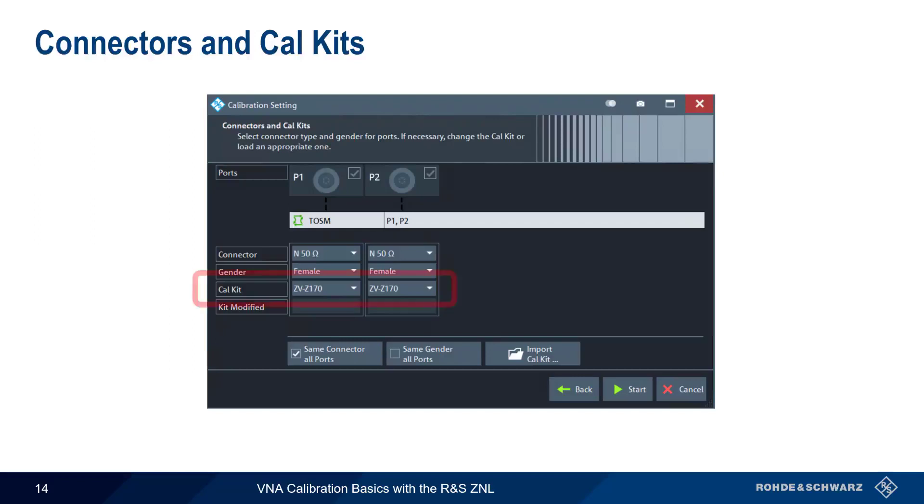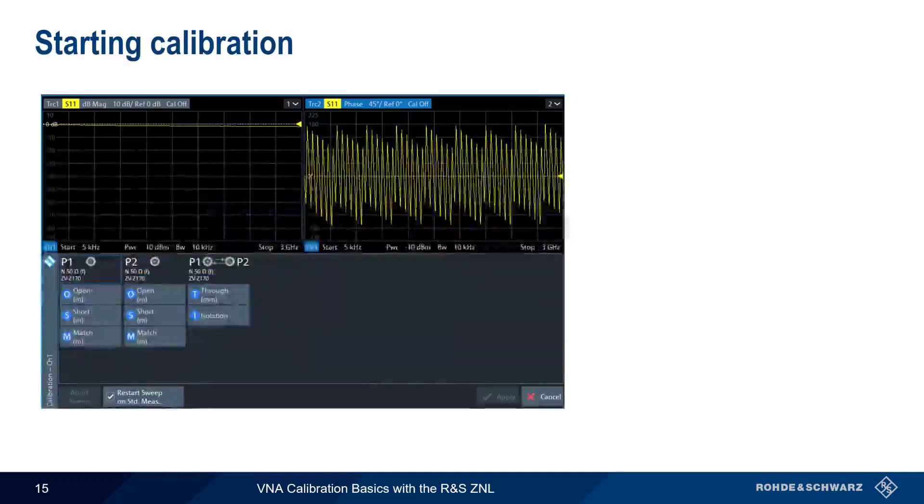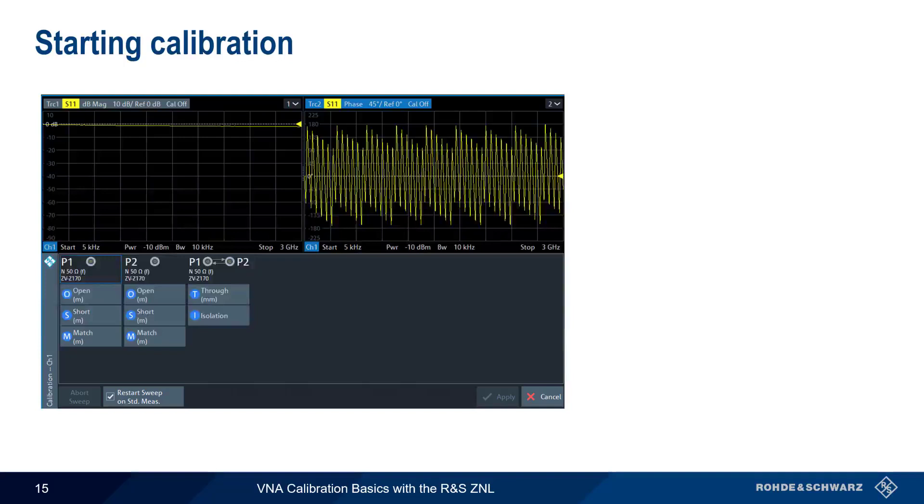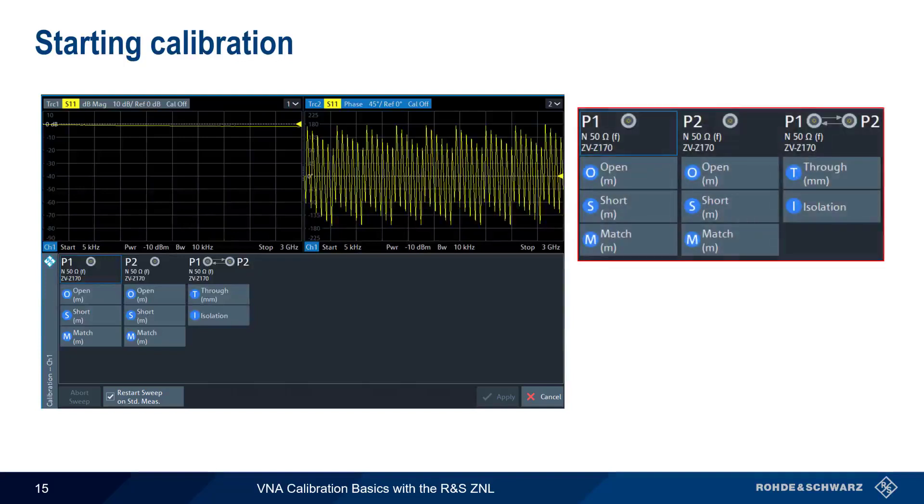And just as before, we need to either select or import our calibration kit data, this time for both ports. Note that for our full two-port calibration, there are eight total steps that have to be completed. We will need to repeat the open short match steps on both port one and on port two, as well as the through measurement between the ports and the isolation measurement.